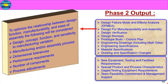To improve design function, manufacturability and ease of assembly, the following will be considered: design concept, function and sensitivity to manufacturing variation, manufacturing and assembly process, dimensional tolerance, performance requirements, number of components, and process adjustments. Design for manufacturability and assembly ensures the product will be easy to manufacture and assemble. This is Design for Manufacturability and Assembly.